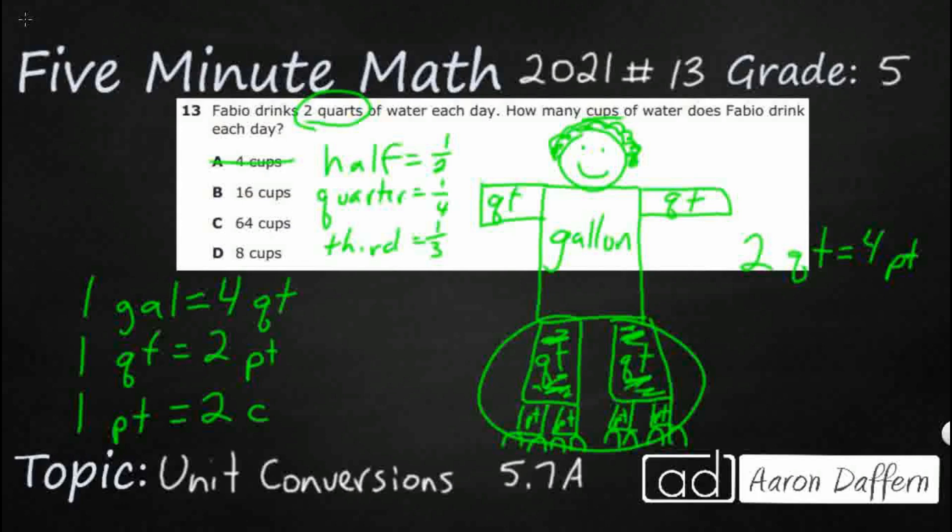And so what we can see here is that we've got our 2 quarts equals 4 pints. And so really, what we're doing here is we're now going to kind of skip the quarts. Let's come down here and let's count our cups. We've got 1, 2, 3, 4, 5, 6, 7, 8. We've got 8 cups. Because there's 4 pints, and each of those pints has got 2 cups in it. So that means our answer is not going to be B or C. It is going to be D, 8 cups.